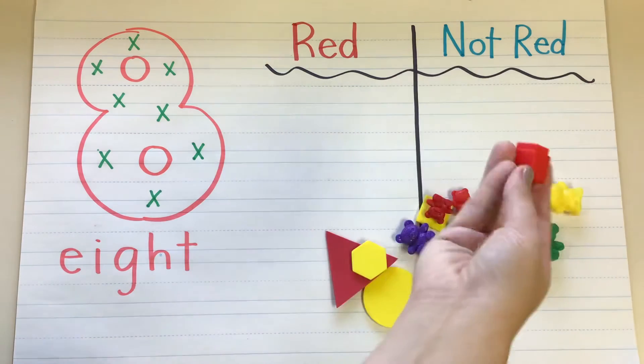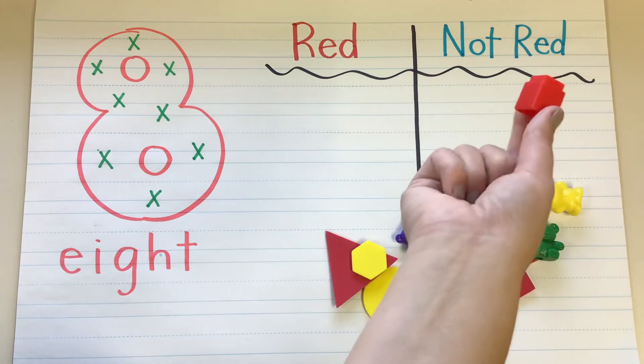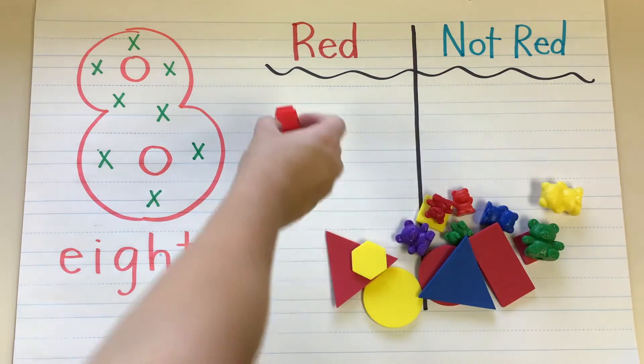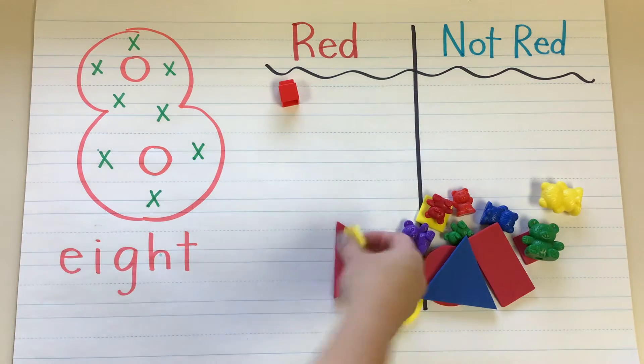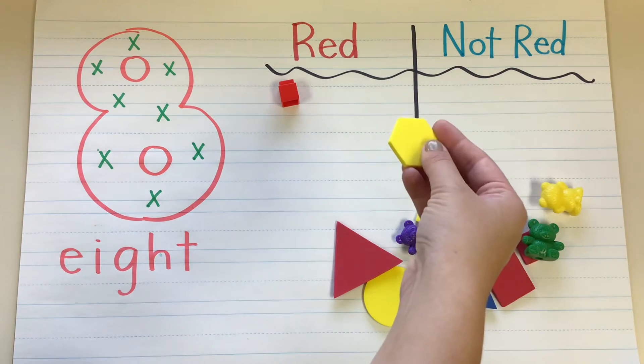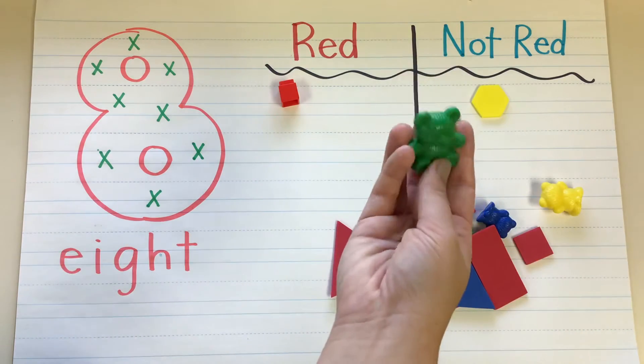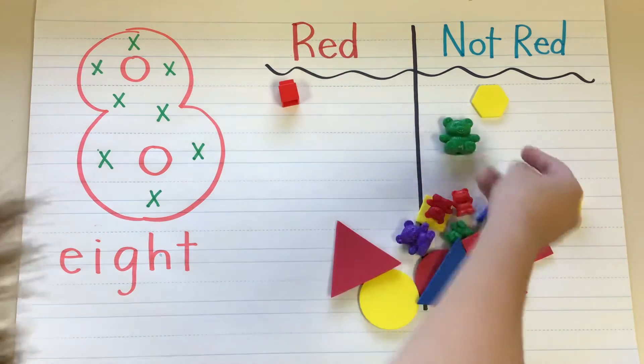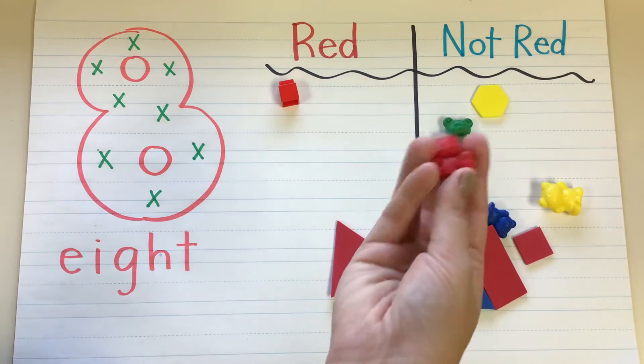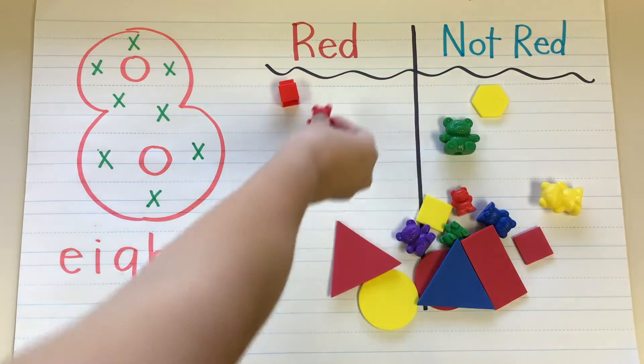Alright, so there's my stuff. Red or not red? This is red. So he's going to go on this side. Red or not red? Not red. That side. Red or not red? Not red. What about this one? It's red. So it's going to go over here.